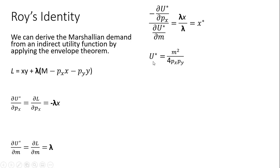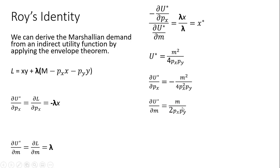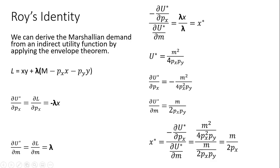Let's do an application. Here is our indirect utility function. We calculate both partial derivatives: the partial with respect to the price of good x equals minus this expression, and the partial with respect to income gives another result. Forming the ratio of these partial derivatives and simplifying, notice that x star equals the Marshallian demand. So the envelope theorem tells us the ratio of these partial derivatives of the indirect utility function equals the ordinary demand. We could get the ordinary demand for good y by changing the top partial derivative from p subscript x to p subscript y. That's it — I hope you found this video helpful.